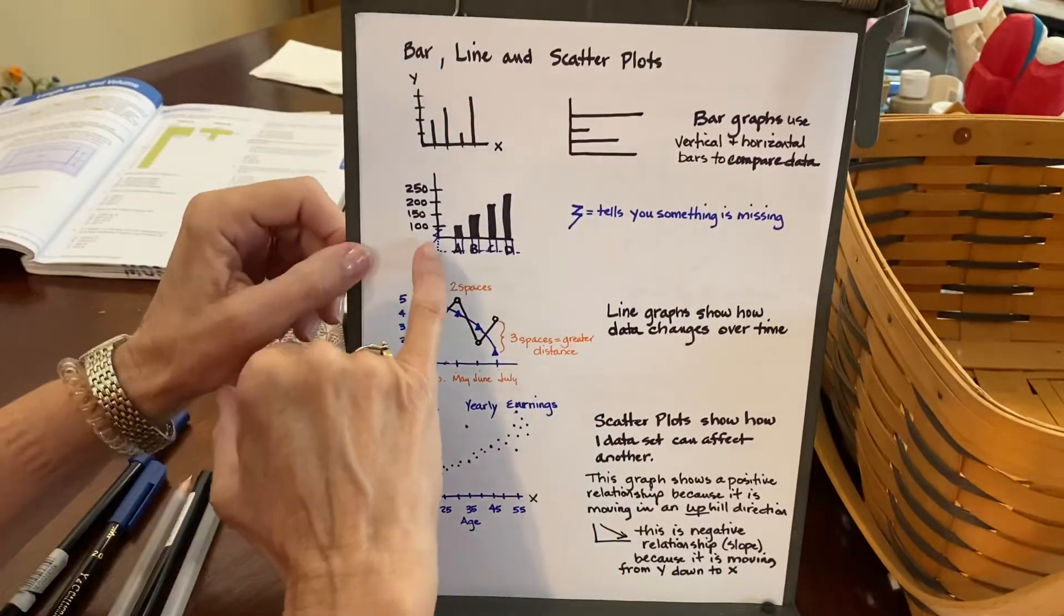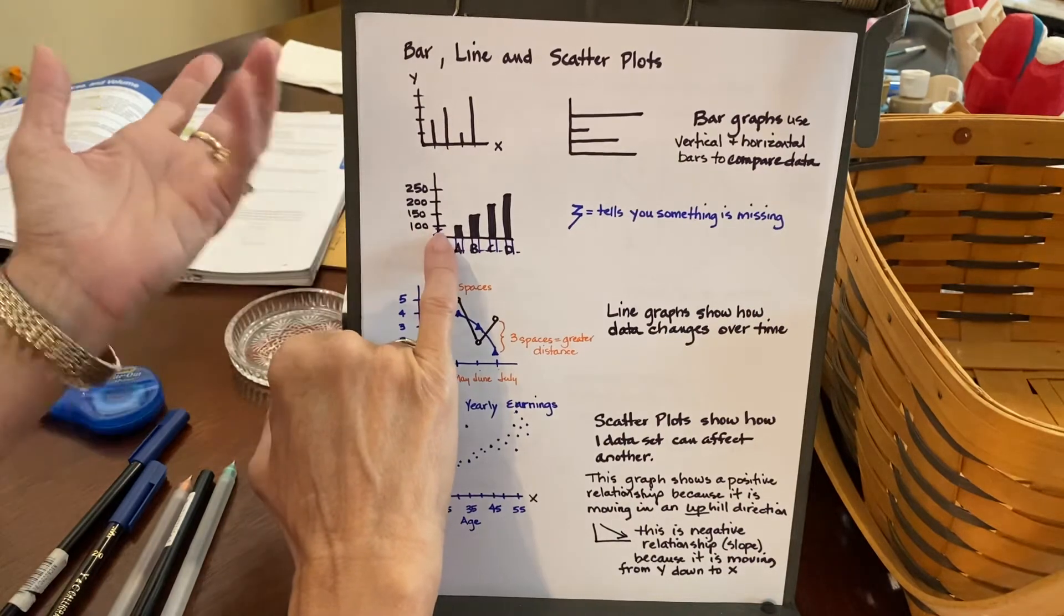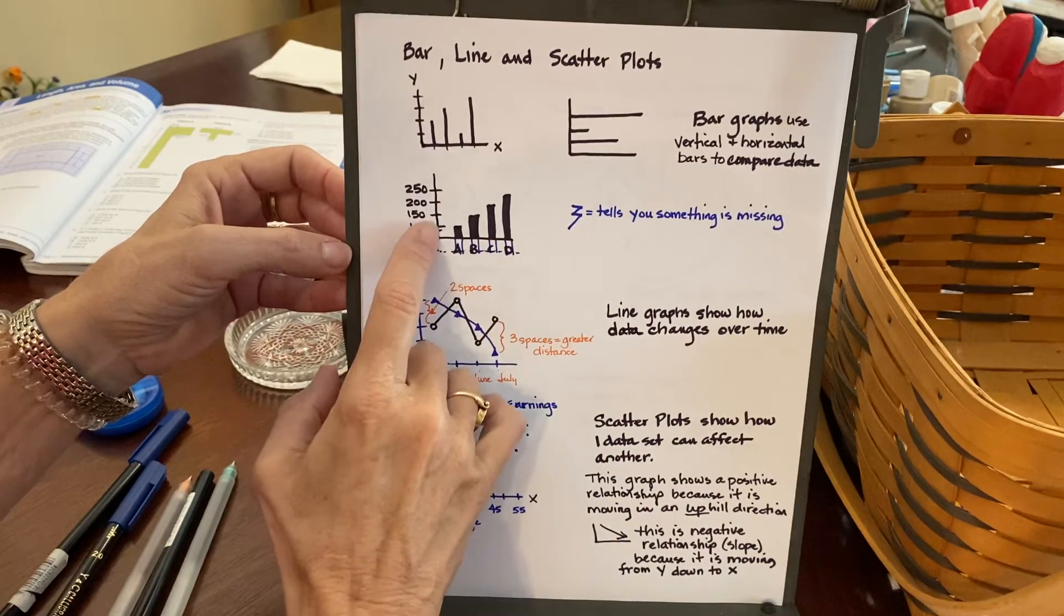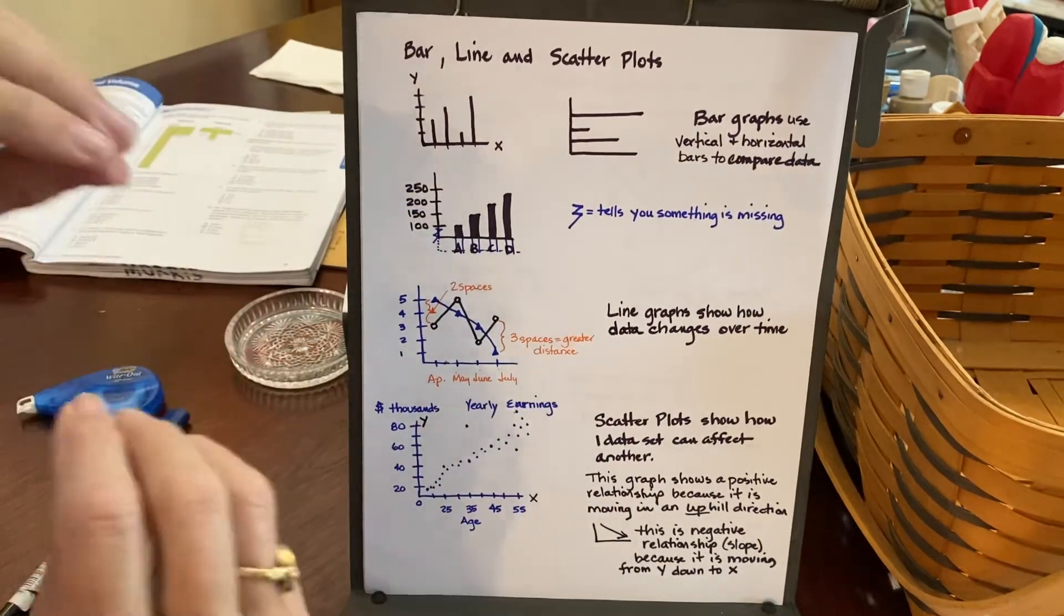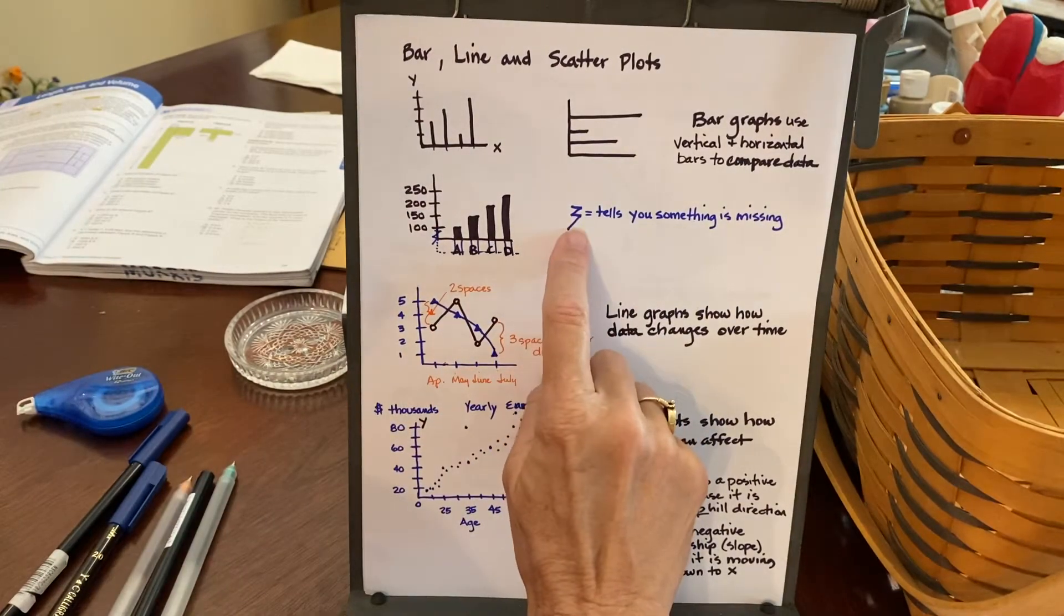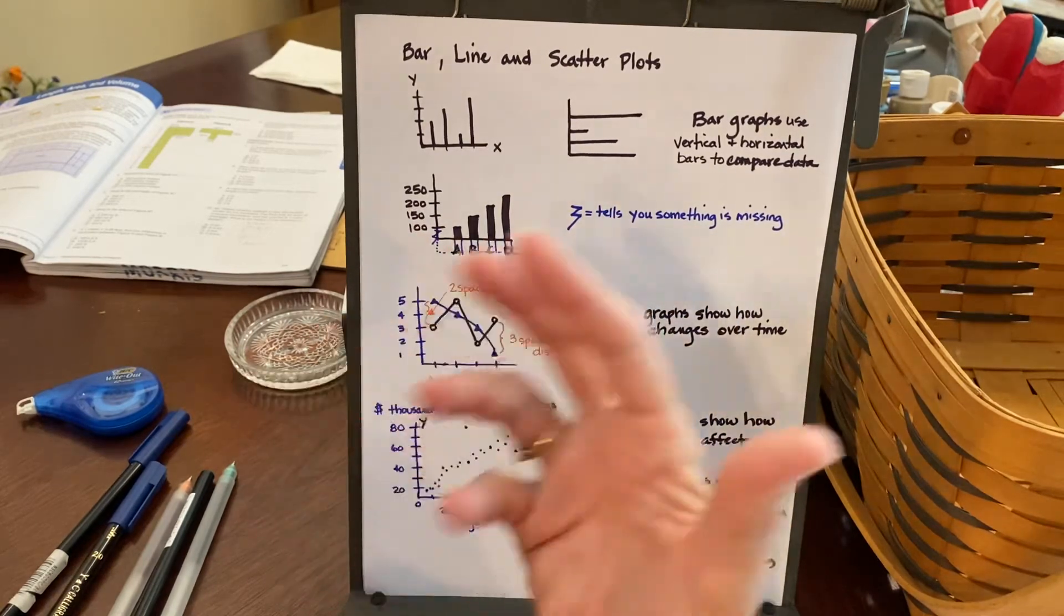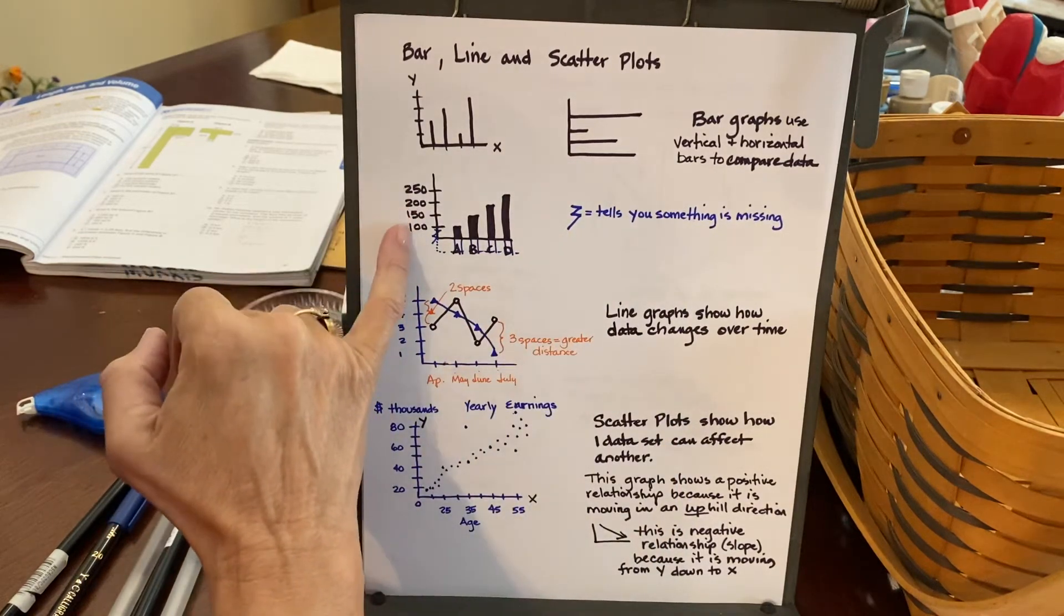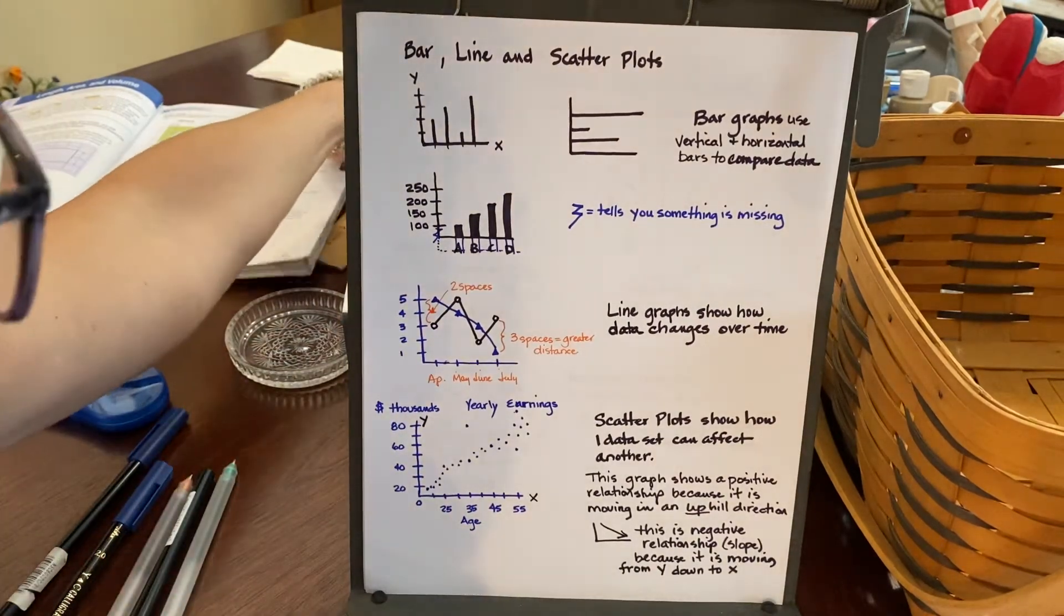But my next hash mark is the number 150, and then 200 and 250. But look at my hash marks. This one from the zero to the 100 is the same measurement as the 100 to the 50. But this is actually 100 points difference. This is only 50 points difference. So visually, they should look different, but they don't. So be aware. Sometimes you'll see this, and it's going to tell you that something is missing. Like maybe they didn't make it proportionate.